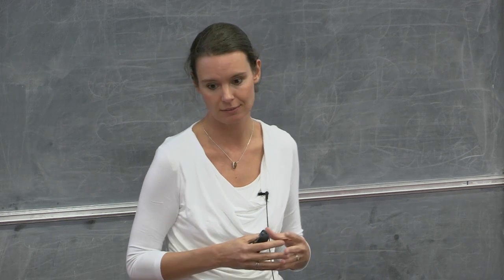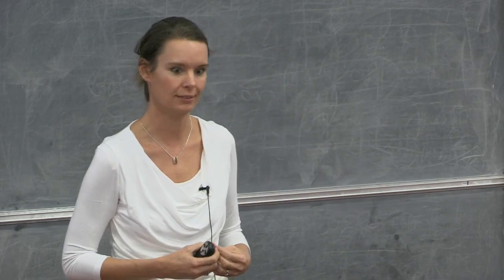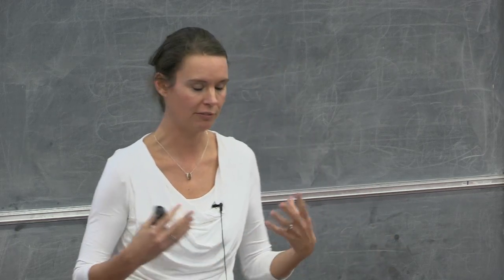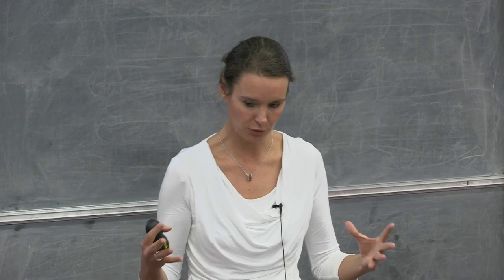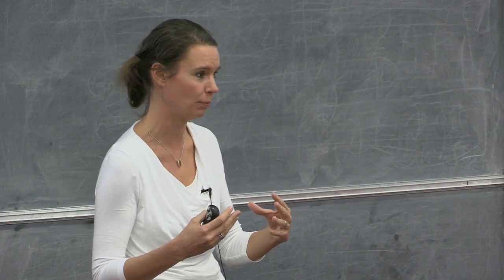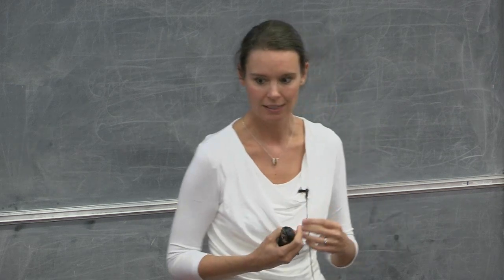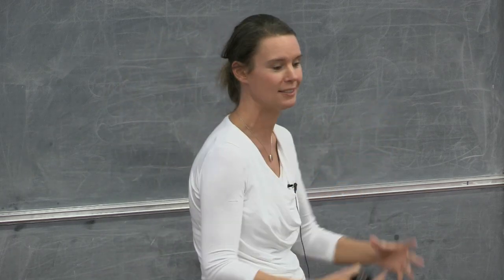We understand that we are in a world where lifestyle factors such as nutrition, stress, exercise, tobacco use, and alcohol may contribute to risk factors that then determine chronic diseases. We also understand that lifestyle factors are not the only determinants — there are environmental factors, age, and genetic factors that play a role as well. Risk factors include high cholesterol, high blood pressure, obesity, and tobacco addiction, which can lead to what have been called diseases of affluence — diseases that seem to increase in prevalence with economic development.